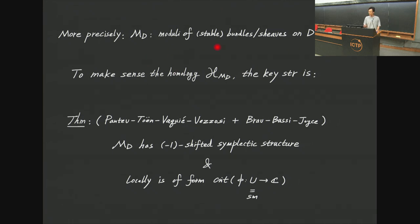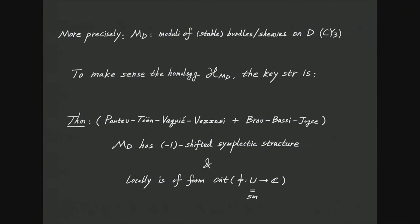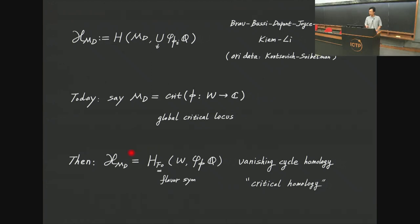Let M_D denote the moduli of bundles or sheaves on the Calabi-Yau three-fold D. To make sense of this homology theory, the key structure is the following theorem due to Pantev-Toën, Vaquié-Vezzosi, and Brav-Bussi-Joyce, which roughly says this moduli of sheaves on Calabi-Yau three-fold D has a derived enhancement with minus-1-shifted symplectic structure. A key property is that locally it can be written as a critical locus of a function on a smooth variety U.